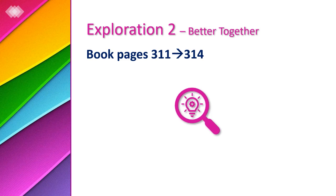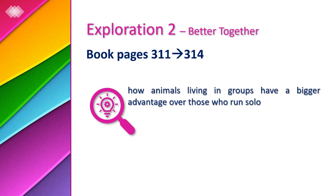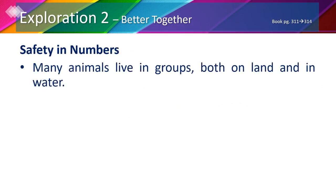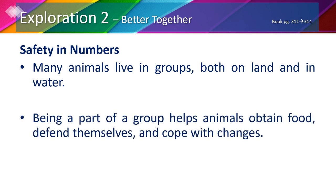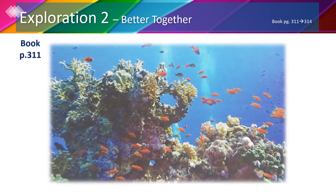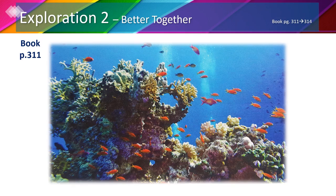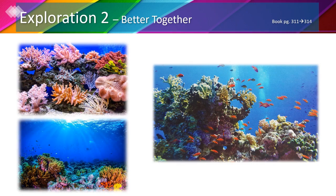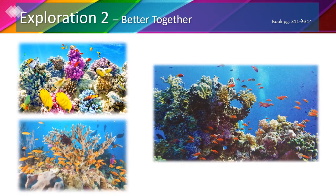In exploration 2 we're going to see how animals living in groups have a bigger advantage over those who live solo. Many animals live in groups both on land and in water. Being part of a group helps animals obtain food, defend themselves, and cope with changes. On page 311 we can see a picture taken from the bottom of the ocean — the structures here are made up of groups of tiny animals called coral. Coral might look like ocean decorations, but they are living organisms that form coral reefs as they grow together.